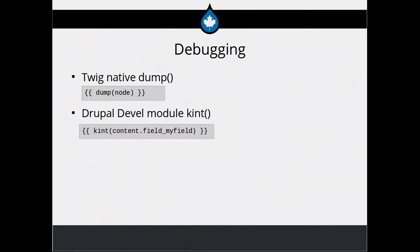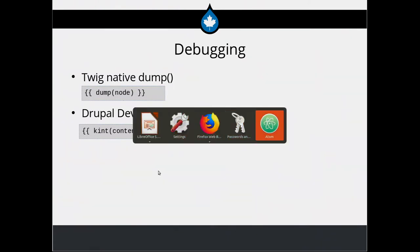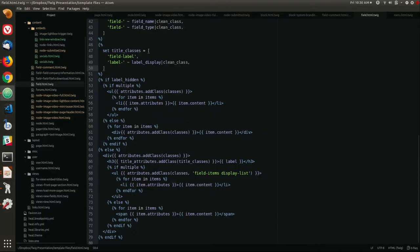For debugging, you can debug directly in Twig. You can use dump — Twig's default — or if you have Devel and Kint module installed, you can kint and output your field values right in the template where you are. That's another great way to use Twig. That's all the slides — we're going to switch over to looking at some actual code.